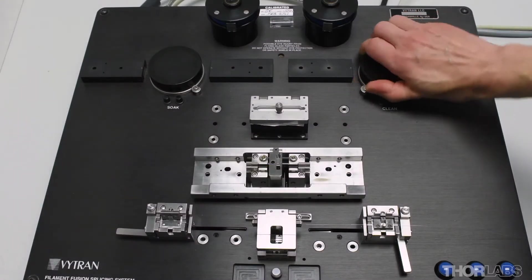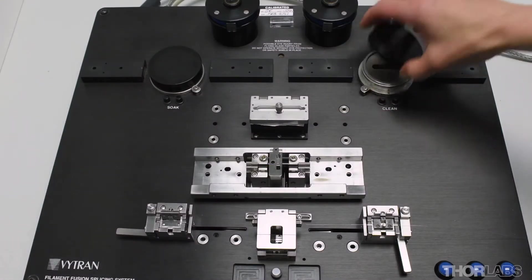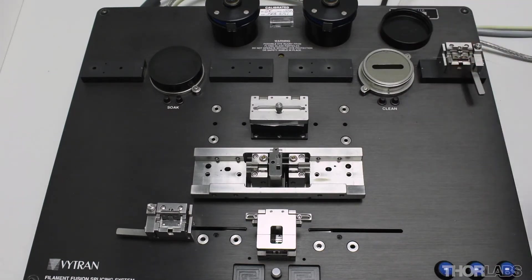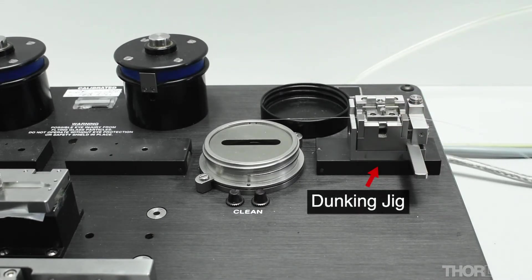When the fibre has been stripped, move the fibre holding block from the stripping station to the cleaning station. Placing it in the dunking jig at the cleaning station will activate the vacuum.